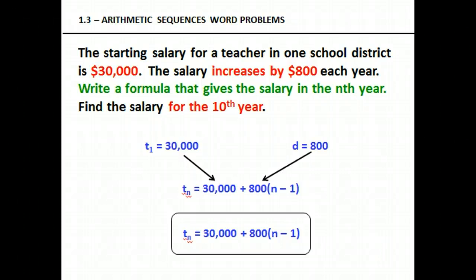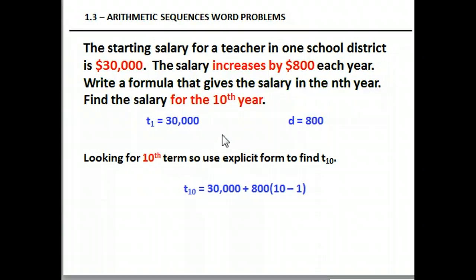Now let's move on to the math part. We have to find for the 10th year. Notice it doesn't say after the 10th year, it says for the 10th year. So we're just going to find t sub 10, the 10th term. We plug in using the formula we just found. t sub 10 equals 30,000 plus 800 times 10 minus 1. Pause now, do the math, and I'll give you the answer in a second.